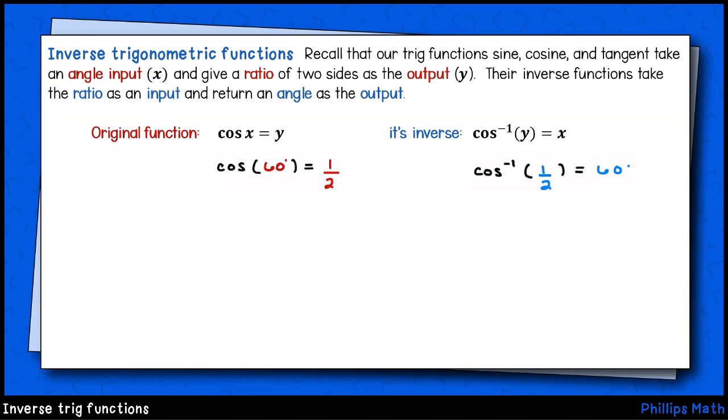Remember that our sine, cosine, and tangent trig functions take an angle input, we'll call it x or theta, and as an output, we get a ratio between two sides of the triangle. That ratio varies based on whether we're looking at the sine, cosine, or tangent function.